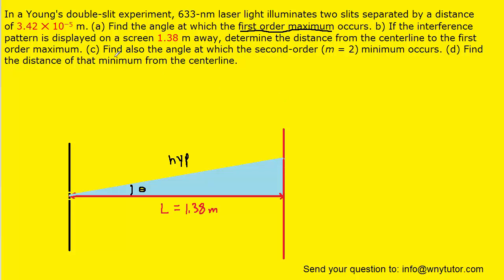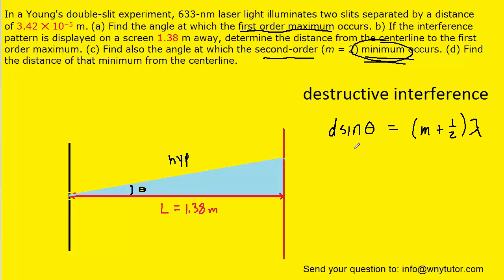Now on to part C, which asks for the angle at which the second order minimum occurs. Because we're examining a minimum, we have to look at destructive interference. For destructive interference, the appropriate equation is basically the same equation, except we have to add a half onto the m value.